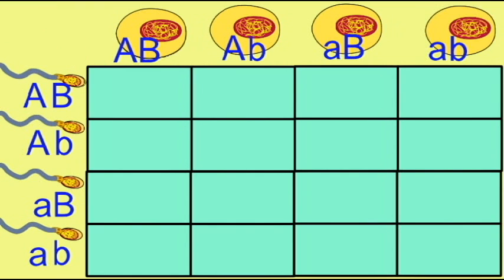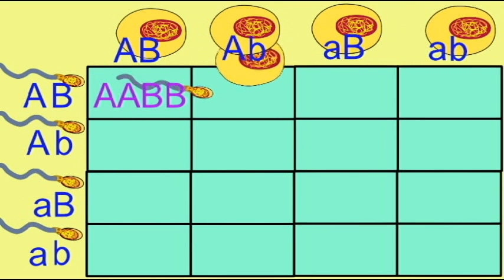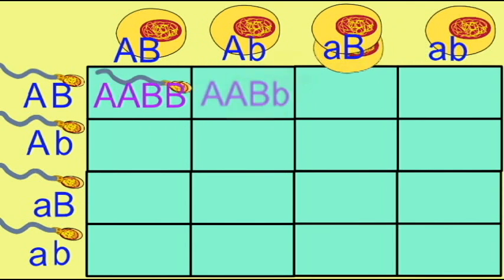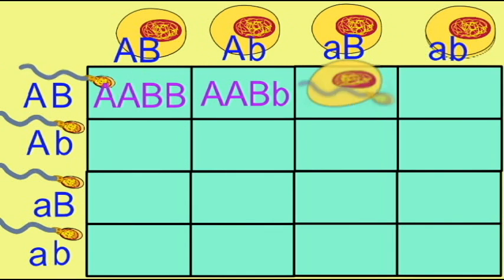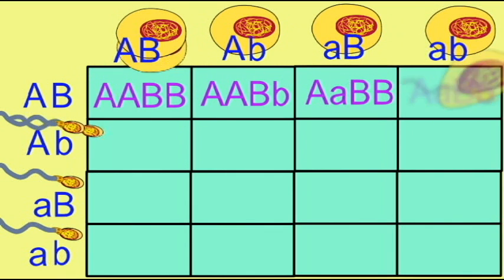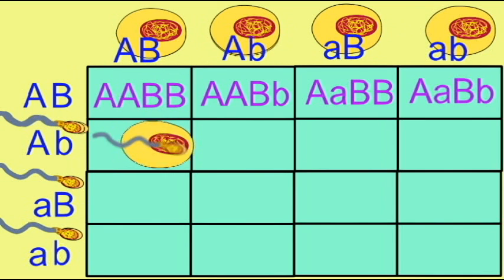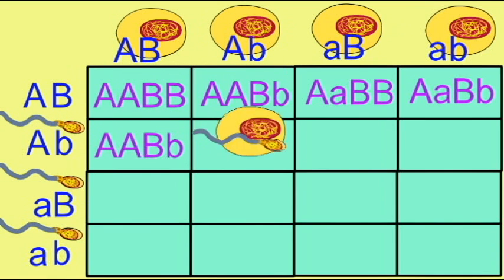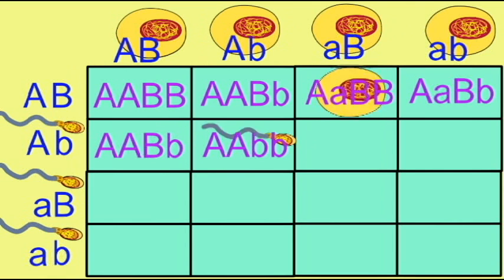When two of these dihybrid individuals are mated, each of the two parents can produce four types of gametes. And there are 16 possible combinations of alleles which can arise in these offspring, the F2 generation.